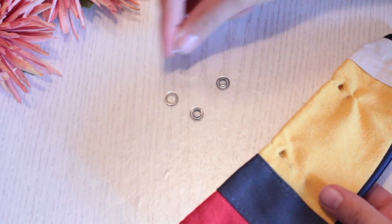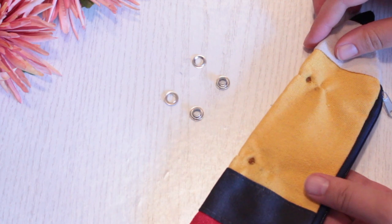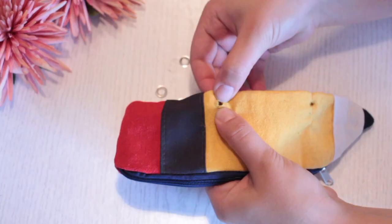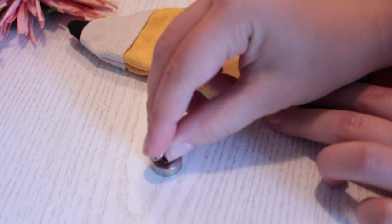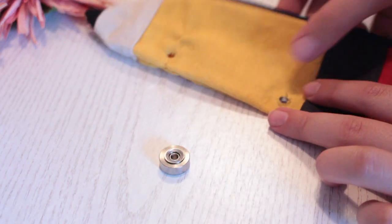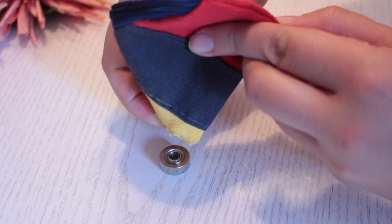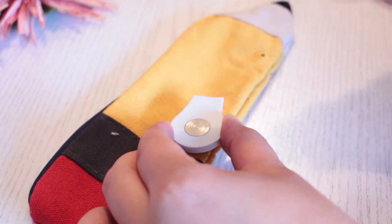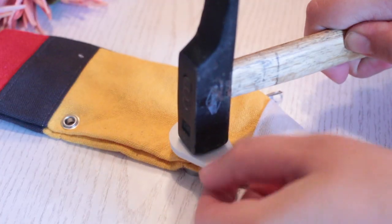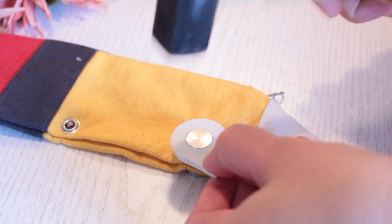Now take male and female eyelets, take the male part and push it into the hole. Then take the female eyelet and place it into the eyelet punch, place the male part right on top and bang them together. Repeat the same process with the other hole.